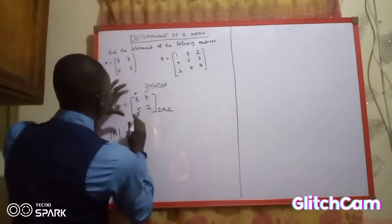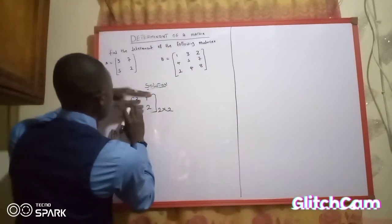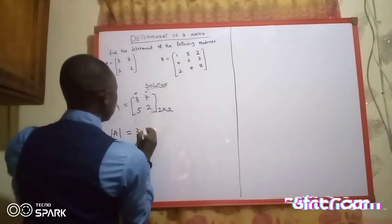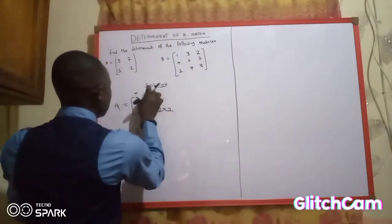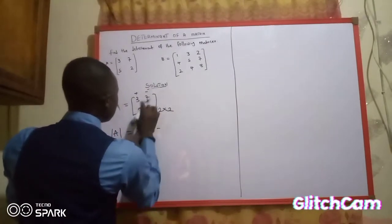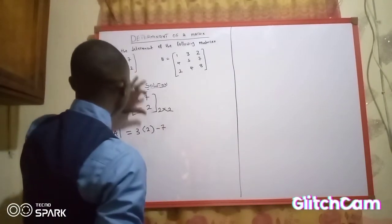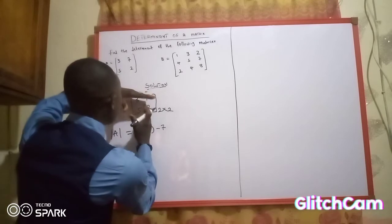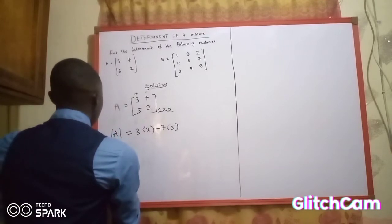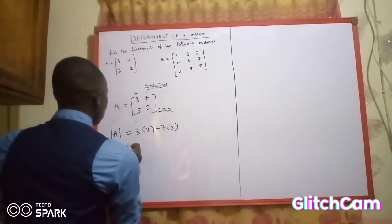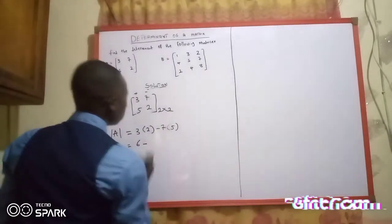You pick this 3, then cover the row and column of this 3 — you cover this place and this place — so we are left with only 2. Open the bracket and put that 2 in the bracket. Then this next place is negative, so the negative will affect the 7: we have negative 7. Then cover the row and column of this segment, and we are left with 5. Put the 5 into the brackets.